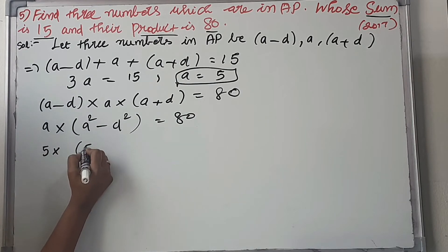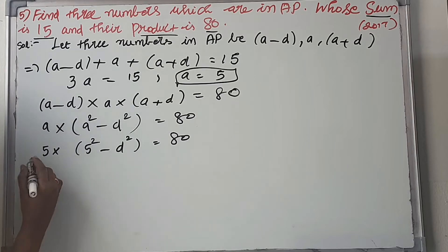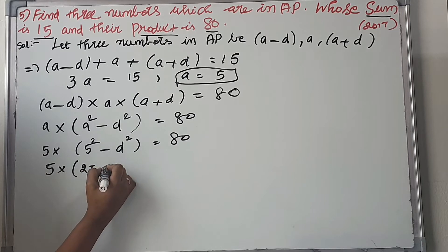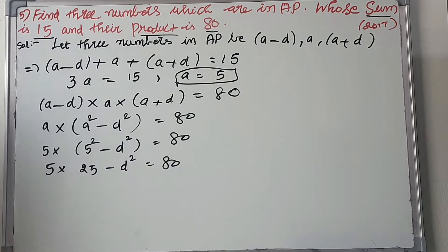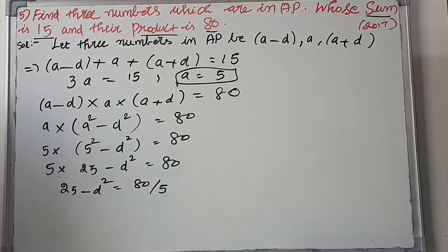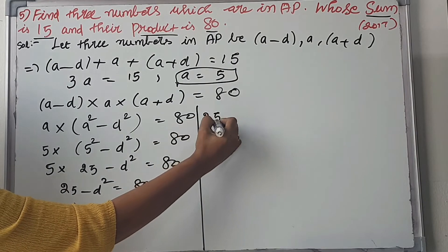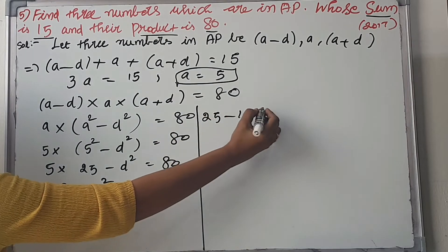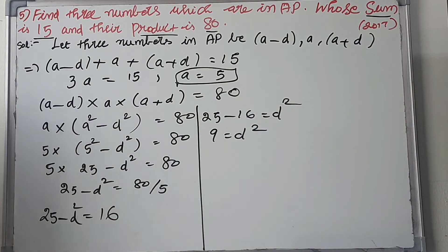Substituting A equals 5: 5 into 5 squared minus D squared equals 80. So 5 into 25 minus D squared equals 80. Dividing both sides by 5, we get 25 minus D squared equals 16.